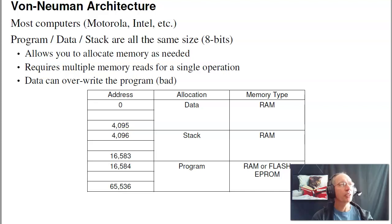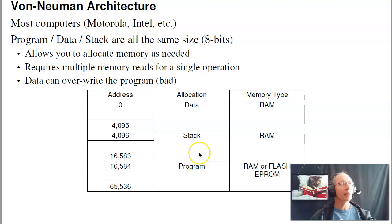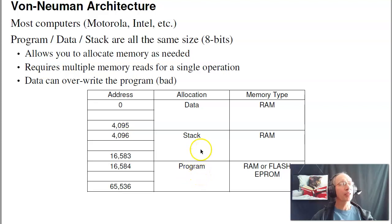To use the processor, you have to understand how they work. There are really two main types of memory architecture: von Neumann and Harvard. Almost everything in the world uses a von Neumann architecture — Motorola, Intel, and just about everyone else. Here, all data is the same size: if it's an 8-bit processor, everything is 8 bits — your data, the stack, the program. The nice thing is you can reallocate memory boundaries. The downside is that if an instruction uses more than 8 bits, a single instruction might be stored across 4 or 5 spots in memory. Also, you can get a stack overflow: if the stack grows too far, it starts overwriting the program, and the program crashes.